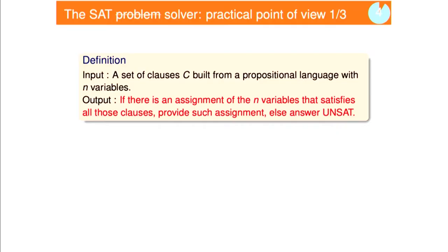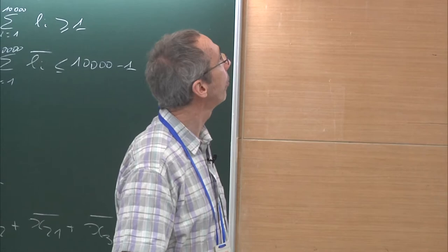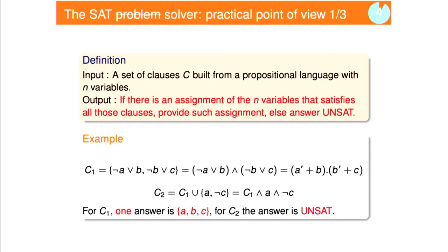This is not how we see it as solver designers. Typically, we have a set of clauses — the input is the same — but if there is an assignment of the n variables that satisfies the clauses, you provide that assignment, else you answer UNSAT. This is the first difference, because you provide a witness, a solution. You are going to provide the assignment A, B, C, or answer UNSAT.